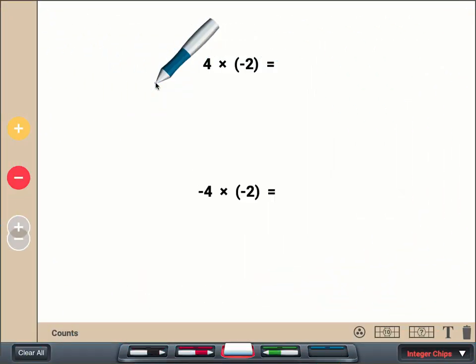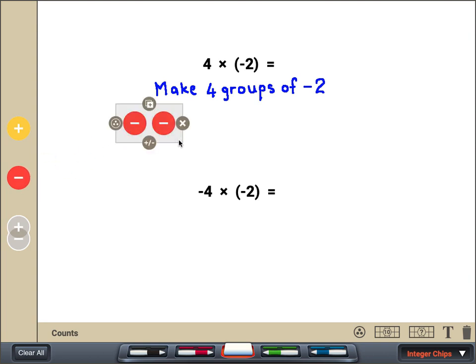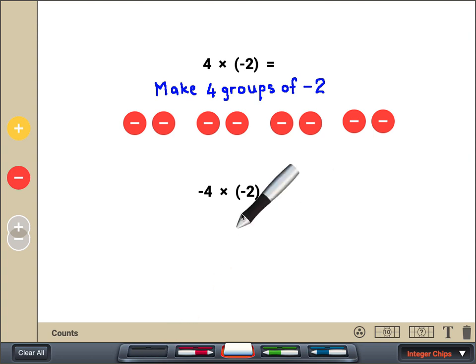So one way to think about 4 times negative 2 is make 4 groups of negative 2. Here's one group of negative 2, and here's a second group, and a third, and a fourth group. There are 8 negative chips in total, so 4 times negative 2 is negative 8.